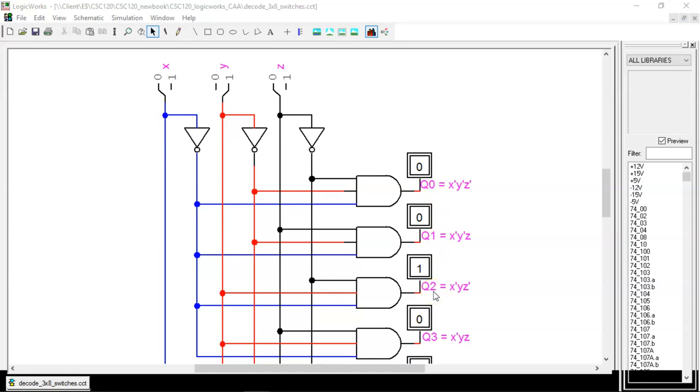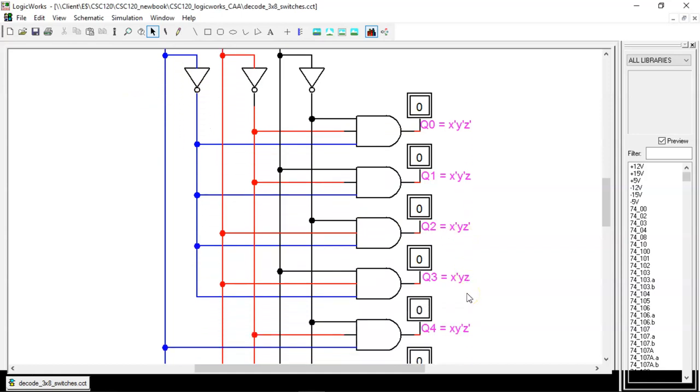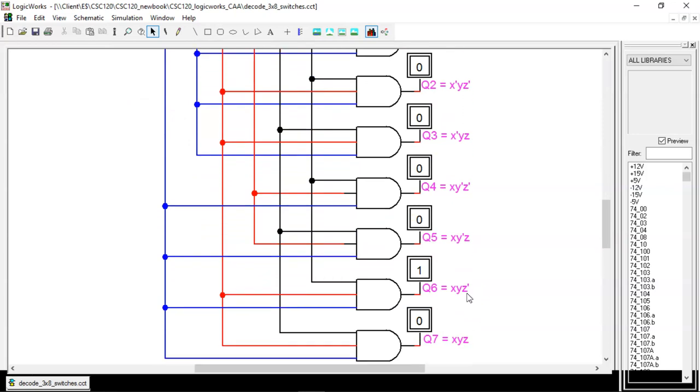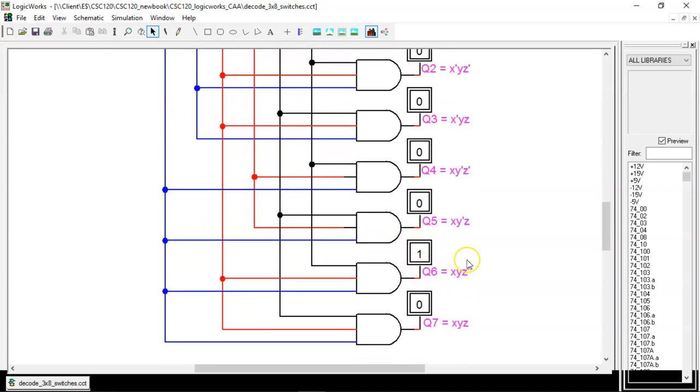So, for a quick test of our understanding, what will happen when we input 1-1-0? Well, that's the binary code for decimal 6, so I expect that as we scroll down, q-6 will equal 1. Sure enough, it is. Just as important, all other outputs equal 0.